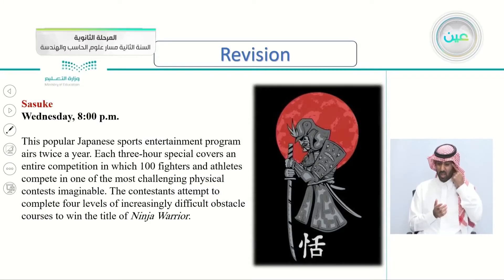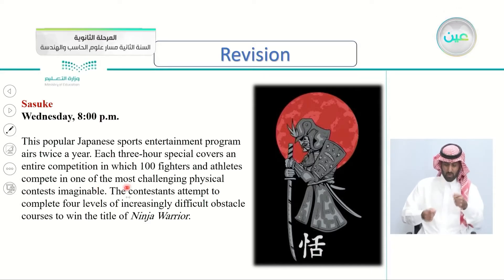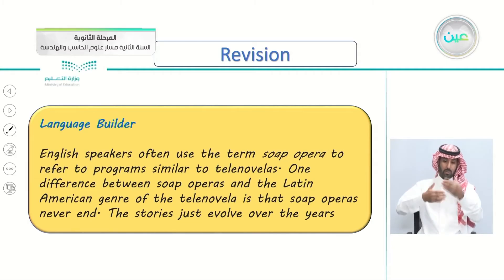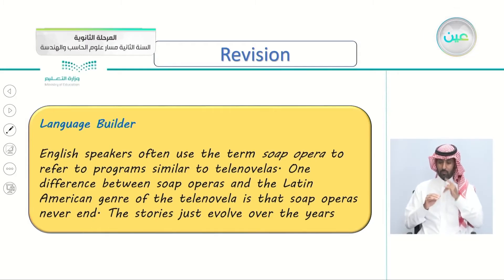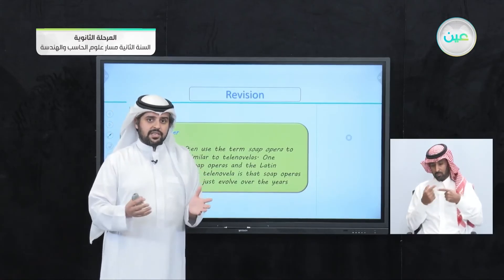Next is Sasuke — from the name you can tell it's Japanese. On Wednesdays at 8 p.m., this popular Japanese sports entertainment program airs twice a year. Each three-hour special covers an entire competition in which 100 fighters and athletes compete in one of the most challenging physical contests imaginable. Also covered in the language builder: English speakers often use the term 'soap opera' to refer to programs similar to telenovelas. One key difference is that soap operas never end — the stories just evolve over the years.